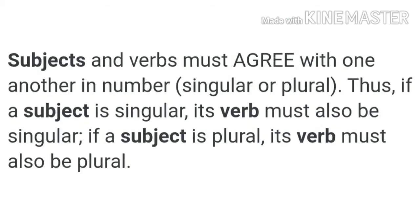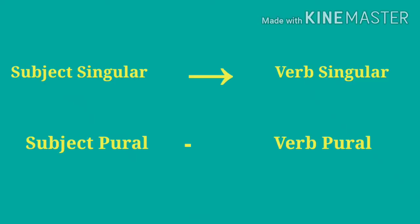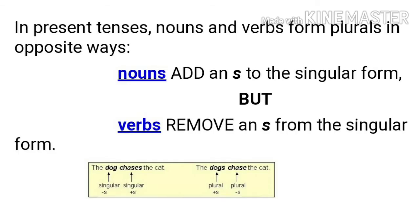If a subject is singular, its verb must also be singular. If a subject is plural, its verb must also be plural. An important thing to remember: in present tense, nouns and verbs form plurals in opposite ways. Nouns add an 's' to the singular form, but verbs remove an 's' from the singular form.